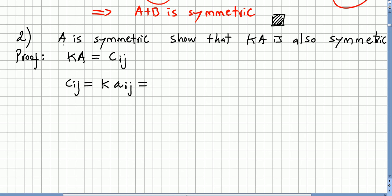But we know it's given that A is symmetric. So saying a_ij is the same as saying a_ji, because A is a symmetric matrix. So ka_ij is equal to ka_ji, so this is the same as c_ji.